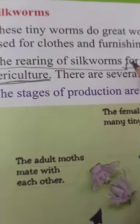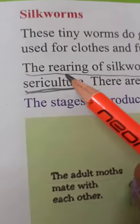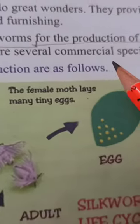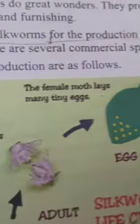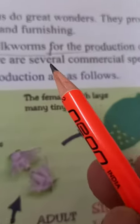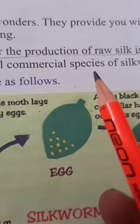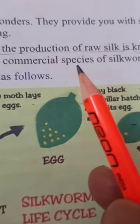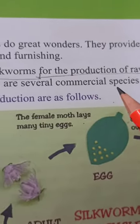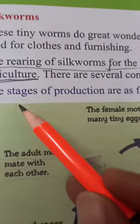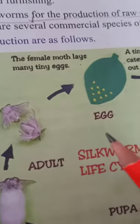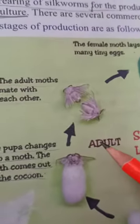That process is called rearing, and the rearing of silkworms is called sericulture. There are several commercial species of silkworms — commercial means for business purposes. People rear many different varieties of silkworms to get different kinds of silk. From studying the stages of the silkworm life cycle, we can understand how we get silk.